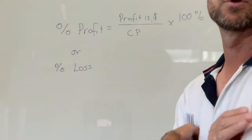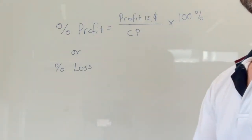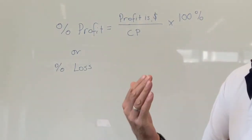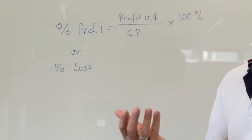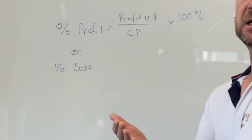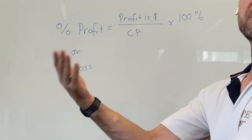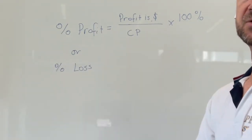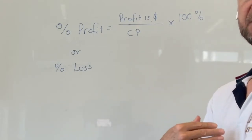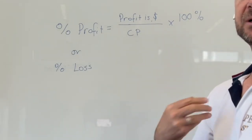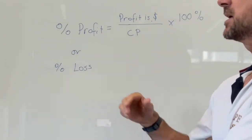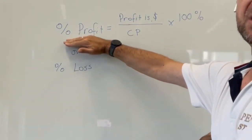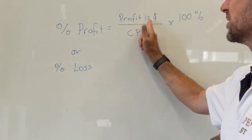Now let's look at profit or loss. With profit or loss, we're looking at the amount of money that we're either making on top of what it cost us to do something, or the loss where we're losing money. To solve that, the percentage profit is the profit in dollars over the cost price, or it's the loss in dollars over the cost price.